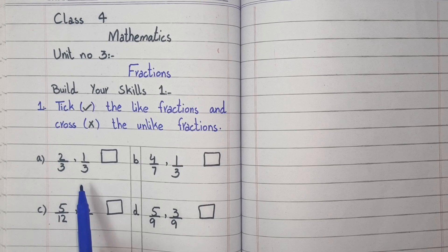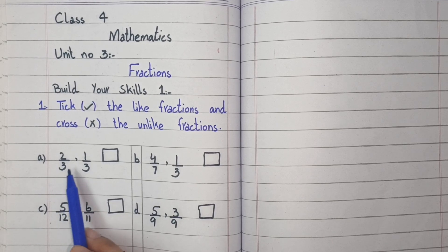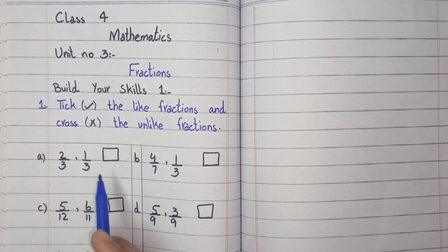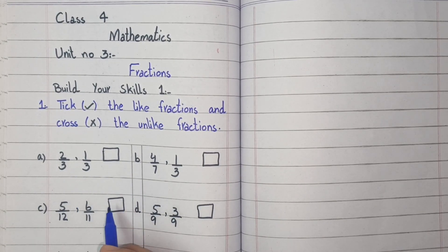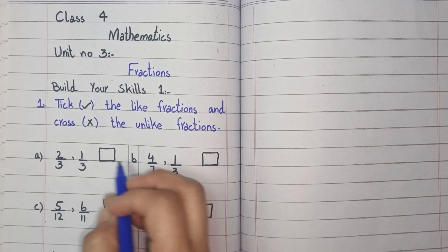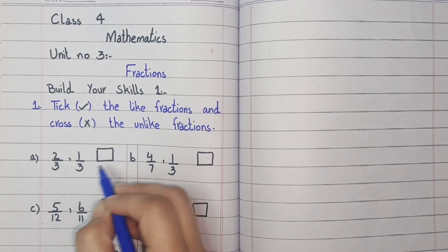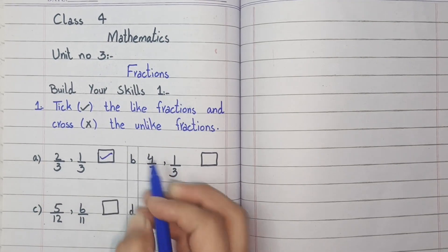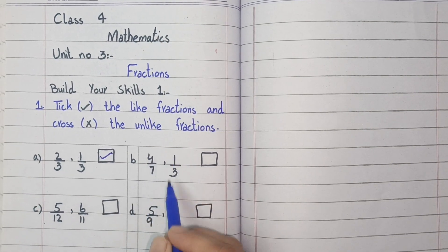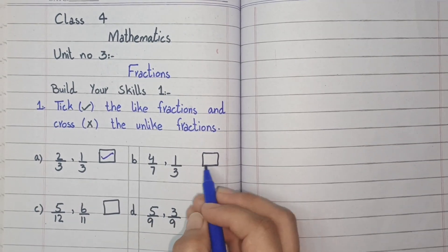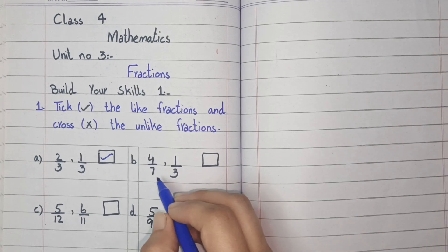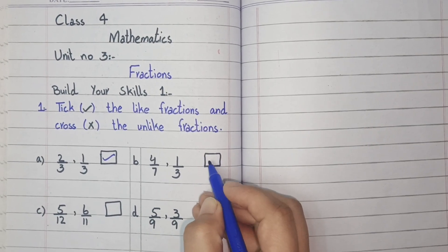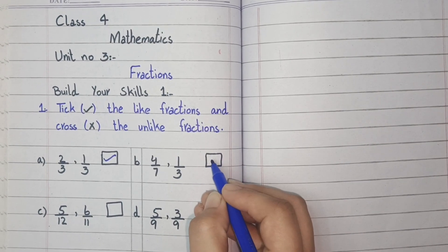The fractions two by three and one by three — the denominators are the same, so these are like fractions. Four by seven and one by three — the denominators are different, so these are unlike fractions.